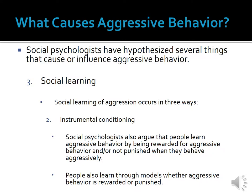The second way people learn when and how to act aggressively is through instrumental conditioning. Social psychologists argue that people learn aggressive behavior by being rewarded for it and/or not punished when they behave aggressively. Learning aggressive behavior through instrumental conditioning happens both directly and indirectly. Directly, people themselves can be rewarded and punished for aggressive behavior — for example, if a person punches somebody and gets money with no punishment, he is much more likely to do so again in the future. Indirectly, people learn that aggressive behavior is either rewarded or punished through observing others.